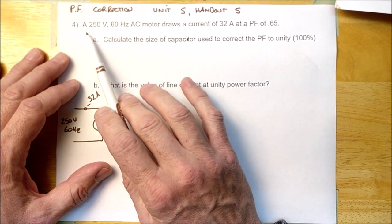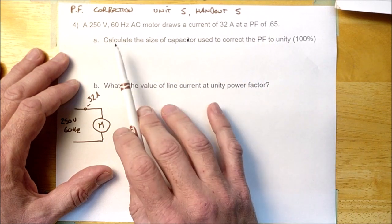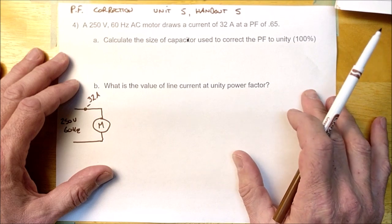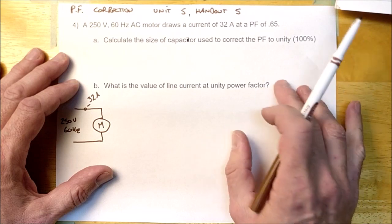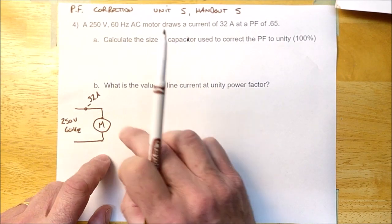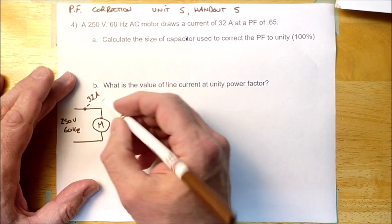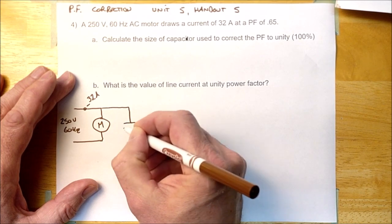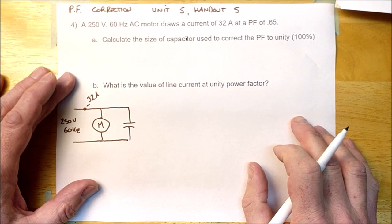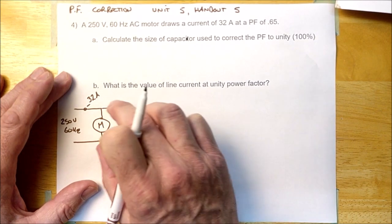To correct the power factor to unity, you already pretty much know how to do it. Here's the question: a 250-volt, 60-hertz AC motor draws a current of 32 amps and has a power factor of 0.65. We're going to calculate the size of the capacitor used to correct the power factor to unity, and also what the value of line current is after correction. I've drawn the motor here — 250 volts, 32 amps. This is before correction; it's essentially an RL series circuit.